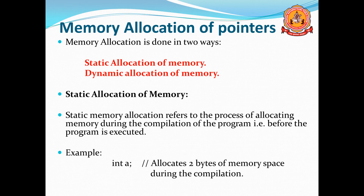Today we are moving to the new topic: memory allocation of pointers — how you can allocate the memory to a pointer. For memory allocation there are two types: one is static memory allocation and second one is dynamic allocation of memory.